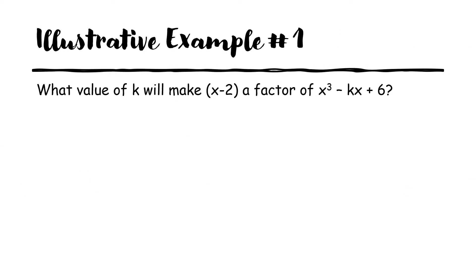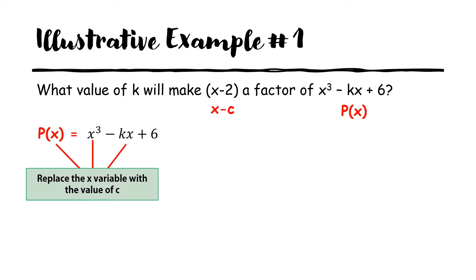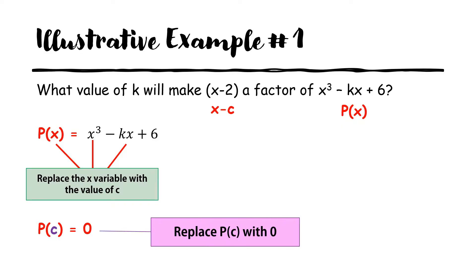Suppose you want to find what value of k will make x minus 2 a factor of x³ minus kx plus 6. For this one, we're going to use the concept of the factor theorem. We have to identify p(x) and x minus c. So p(x) is equal to x³ minus kx plus 6. Since we want it to be a factor, p(c) should be equal to 0.